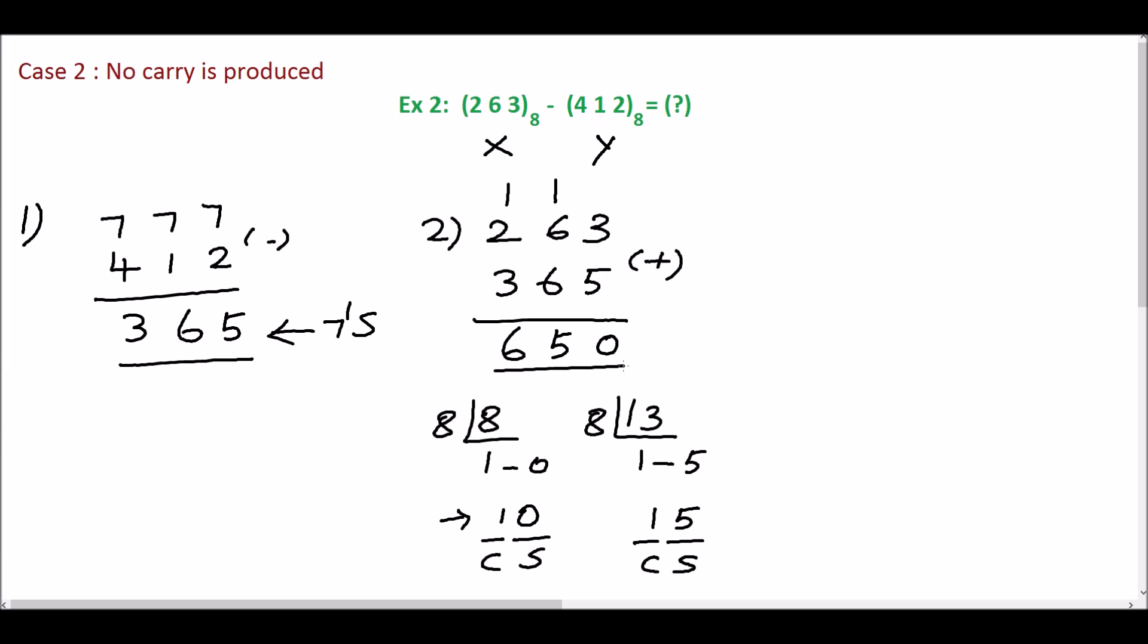So take the 7's complement for the sum. Sum is 650. Take 7's complement for this. Subtract the digits from 7. 7 minus 0 is 7, 7 minus 5 is 2, 7 minus 6 is 1.